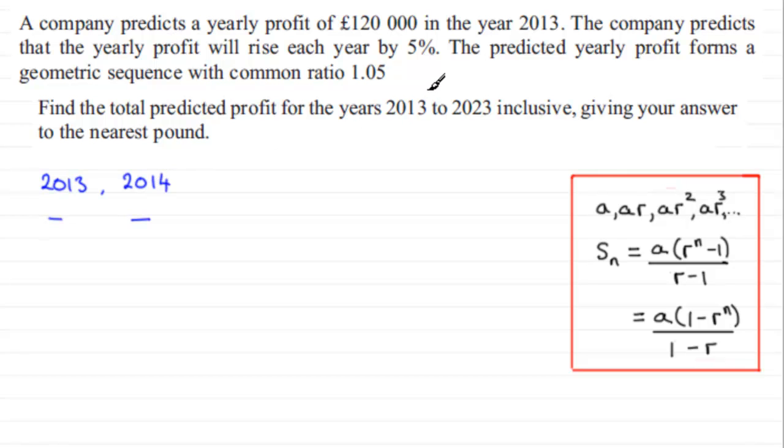So what I'm trying to say is that up to 2023, it's no good just taking away 2013 away from 2023 getting 10. There aren't 10 terms in the sequence. There's in fact 11 terms in the sequence. And that's the bit that you've just got to take care of. I'm always a little bit suspicious when I get questions like this.